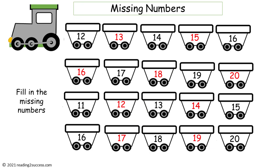The first row: twelve, thirteen, fourteen, fifteen, sixteen. The second row: sixteen, seventeen, eighteen, nineteen, twenty. The third row: eleven, twelve, thirteen, fourteen, and fifteen. And our last row: sixteen, seventeen, eighteen, nineteen, and twenty.